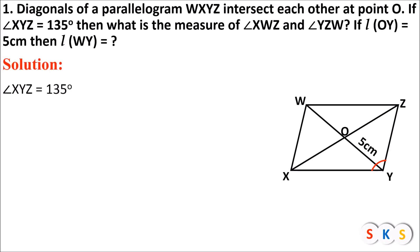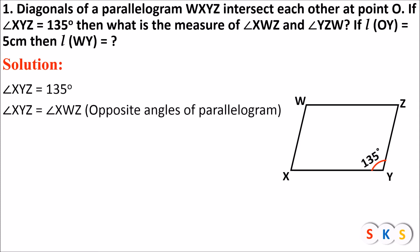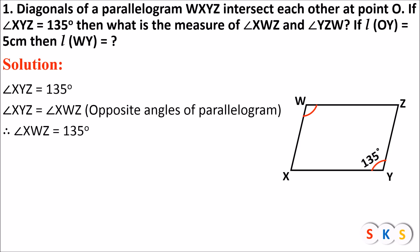Angle XYZ equals 135 degrees. Angle XYZ equals angle XWZ — you can see in this figure angle XYZ and angle XWZ will be congruent. These two angles will be congruent to each other. Because they are opposite angles of a parallelogram, and we know opposite angles of parallelograms are congruent. So here angle XYZ is given 135 degrees. Therefore, angle XWZ will also be 135 degrees.